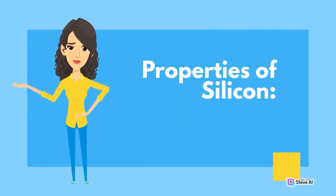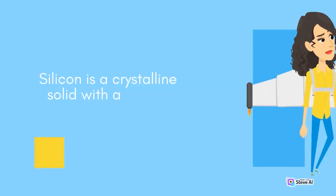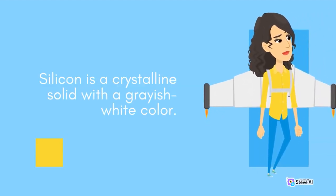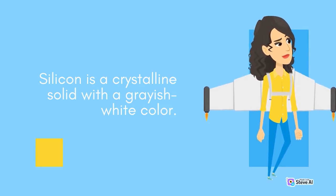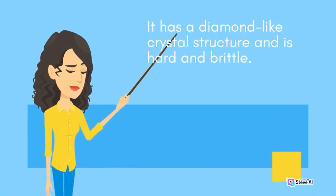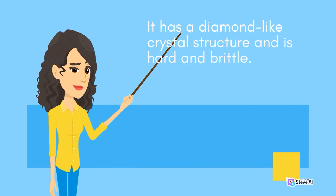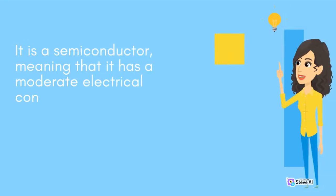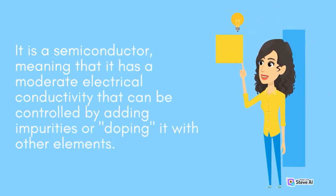Properties of Silicon. Silicon is a crystalline solid with a grayish-white color. It has a diamond-like crystal structure and is hard and brittle. It is a semiconductor, meaning that it has a moderate electrical conductivity that can be controlled by adding impurities or doping it with other elements.